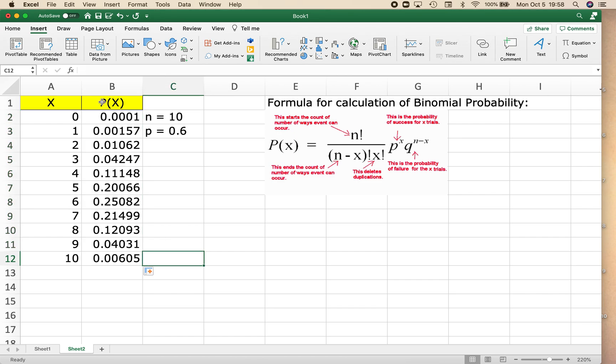So the probability that I have one success in my experiment is 0.00157. The probability that 2 of my trials are successful is 0.0106, all the way down to the probability that all 10 of my trials are successful is 0.0061.